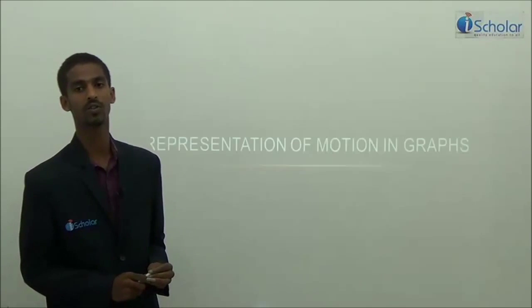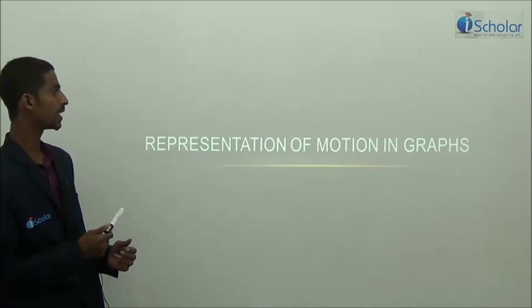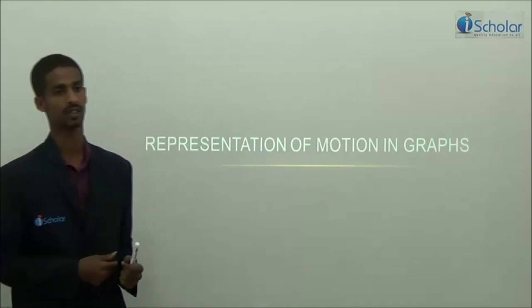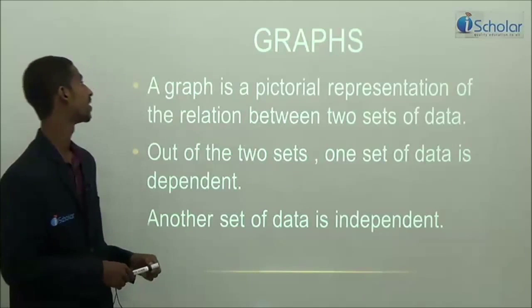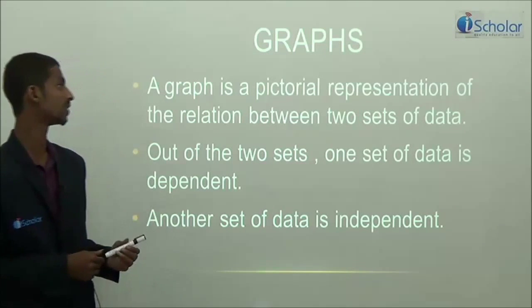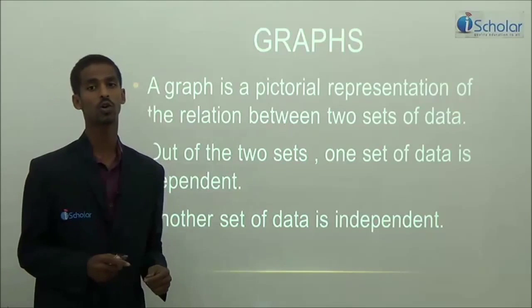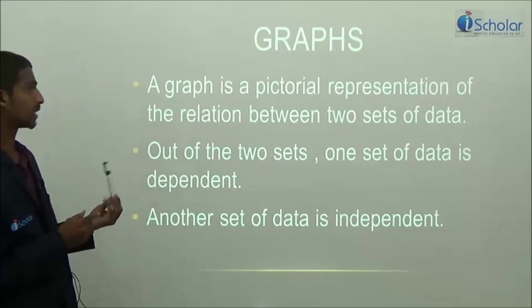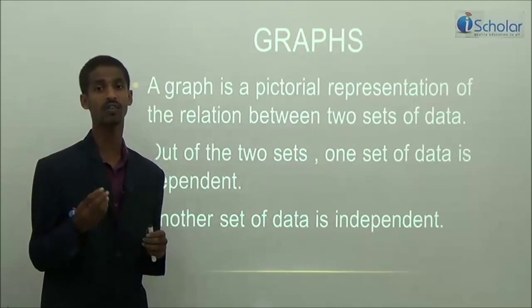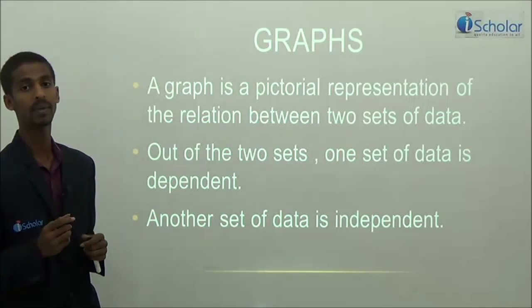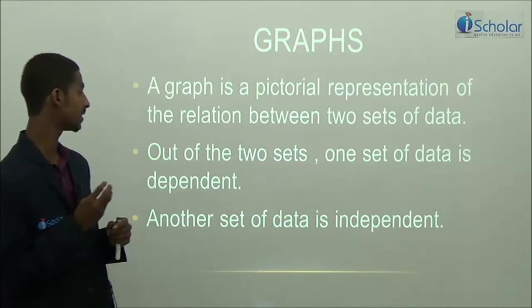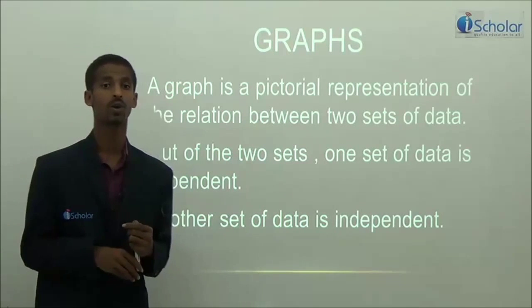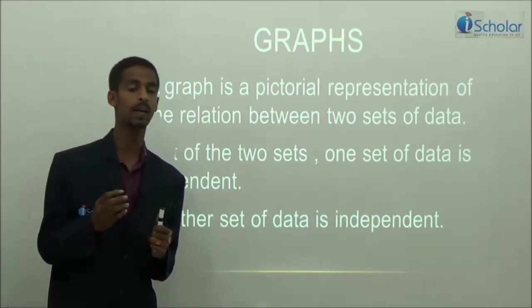Good evening everyone. Today we'll be dealing with the topic of graphical representation of motion — how to represent motion in a graph. A graph is a pictorial representation of the relation between two sets of data. Out of these two sets, one is dependent, meaning it depends on something else, whereas the other set of data is independent.